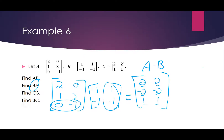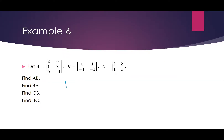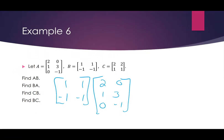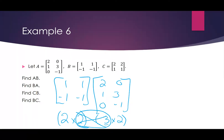Now let's do B times A. B is 1, 1, negative 1, negative 1, and we're multiplying it with A, which is 2, 0, 1, 3, 0, negative 1. This is a 2 by 2 matrix times a 3 by 2 matrix — and you'll notice the middle numbers are not the same, which means this matrix multiplication does not work at all. It is not possible to do B times A, so there is no answer. If I try to do the first row by the first column, I have two elements here and three elements there — they're not the same number, so we can't do this. B times A doesn't exist.